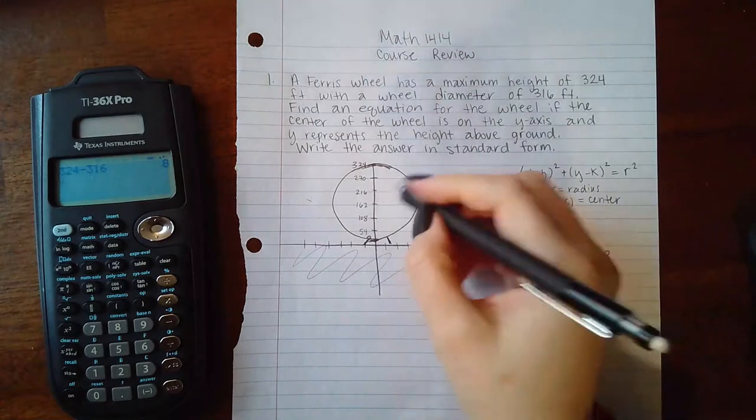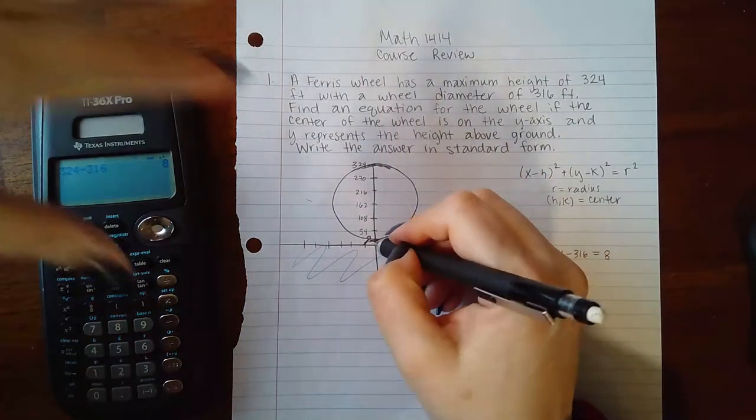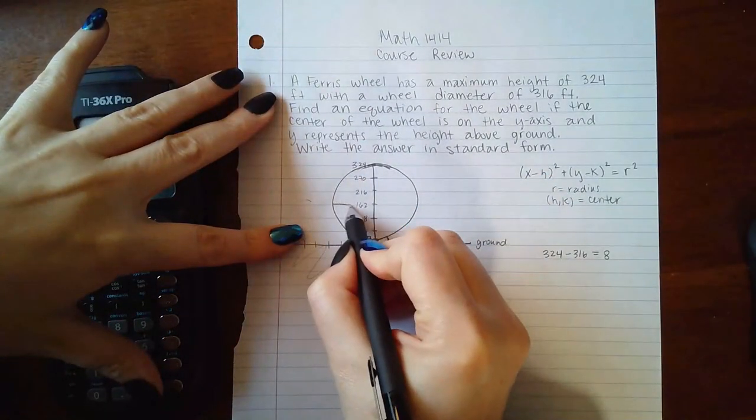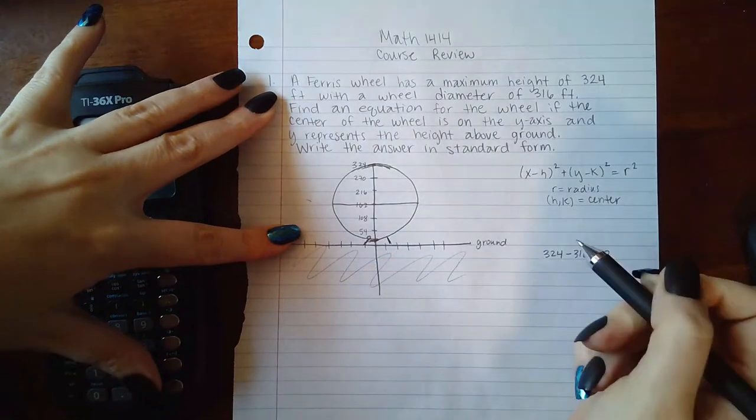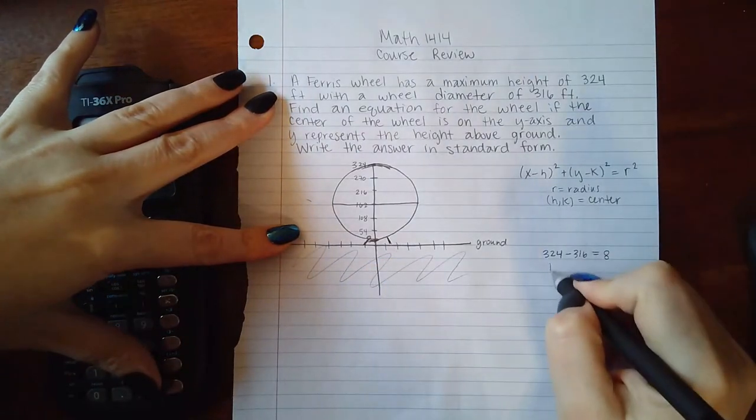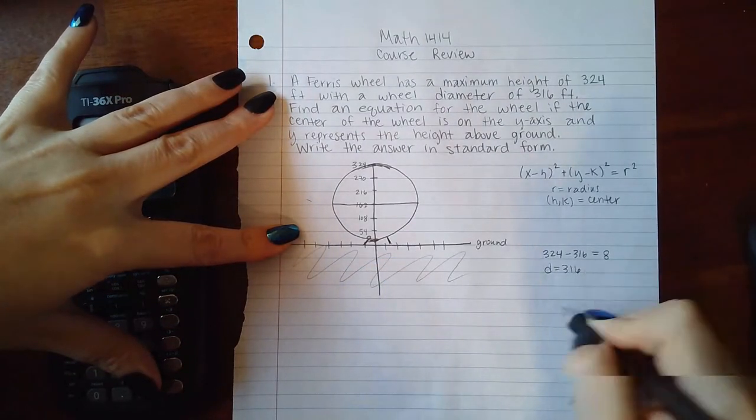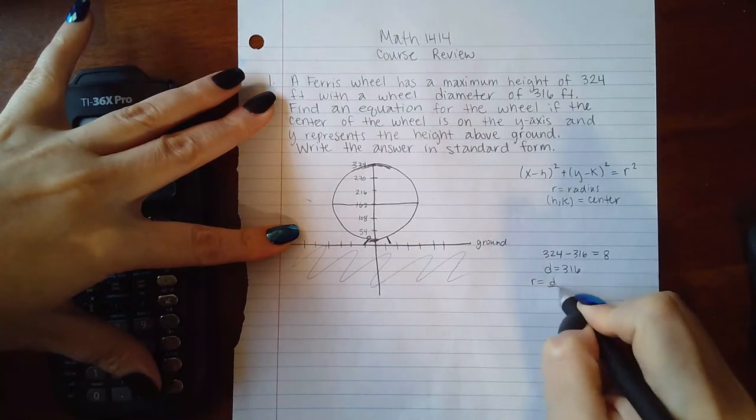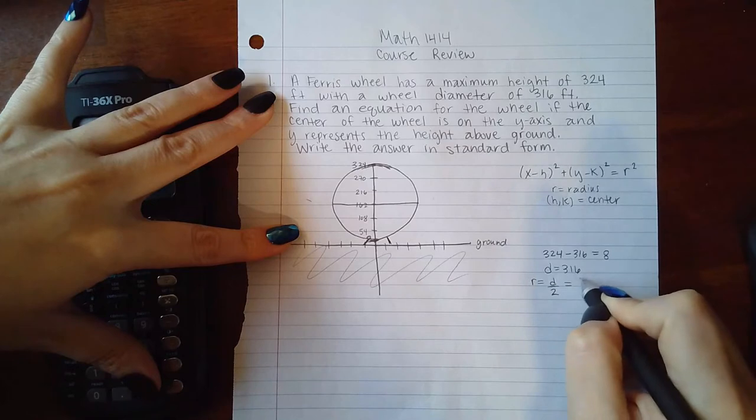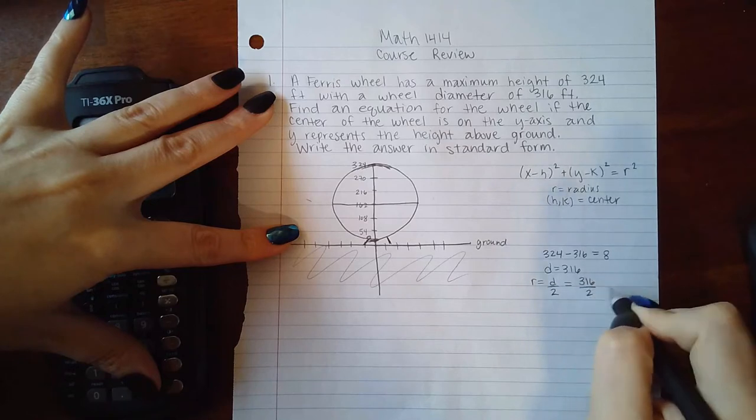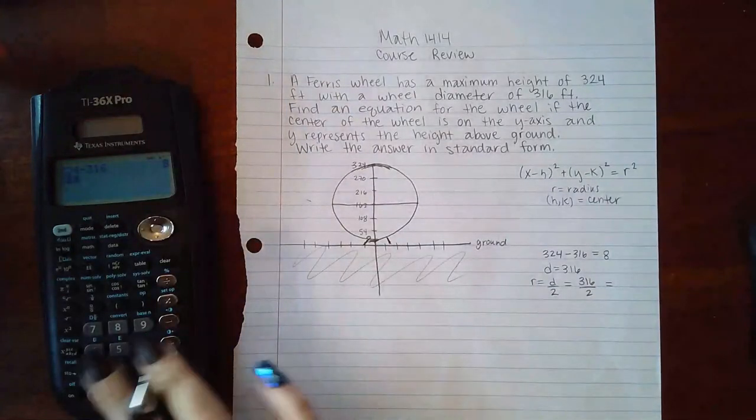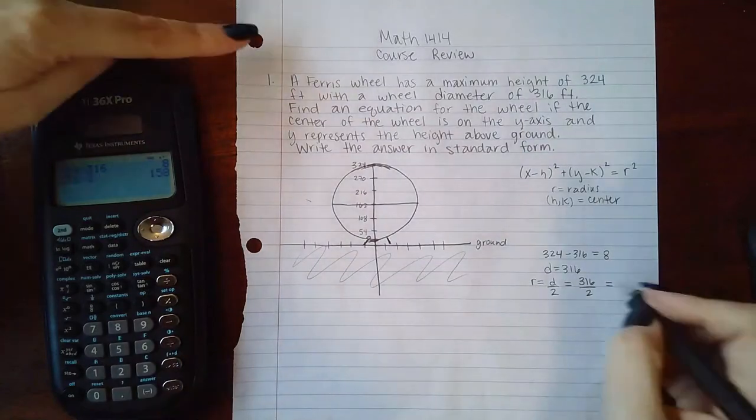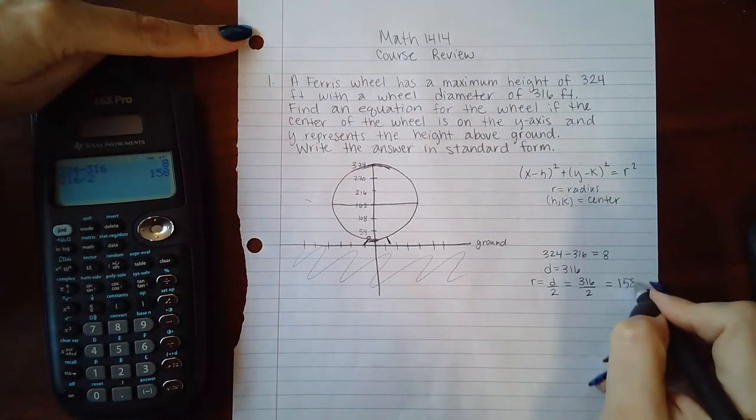Okay, so I know the diameter is 316. I could even go this way and say that this diameter is 316. But in order for me to figure out what the radius is, we have to remember that the radius is half of the diameter. So if I want to know what the radius is, I can divide 316 by 2, and I get that the radius is 158.